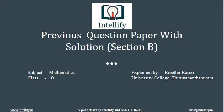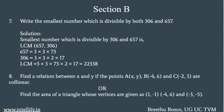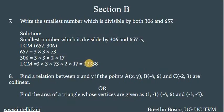The first question, question number 7: write the smallest number which is divisible by both 306 and 657. The smallest number which is divisible by both these numbers will be the LCM of 306 and 657. So for this, first we have to prime factorize 657 and 306. You will get 657 is equal to 3 into 3 into 73, and 306 is equal to 3 into 3 into 2 into 17. So the LCM will be 3 into 3 into 73 into 2 into 17, which is equal to 22,338. So that is the smallest number which is divisible by 306 and 657.